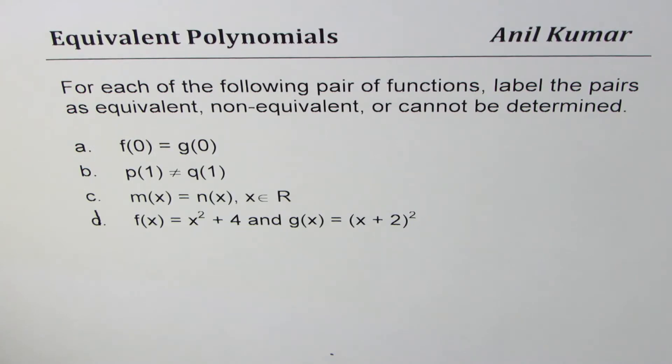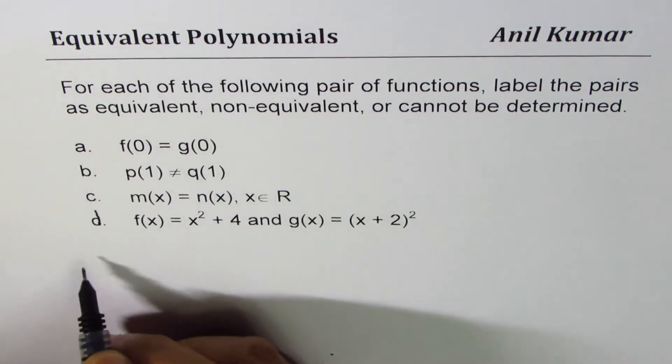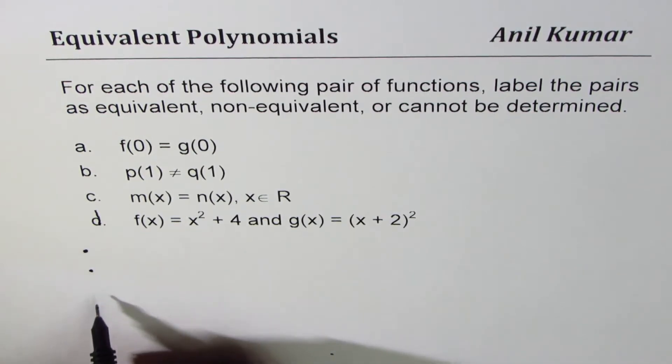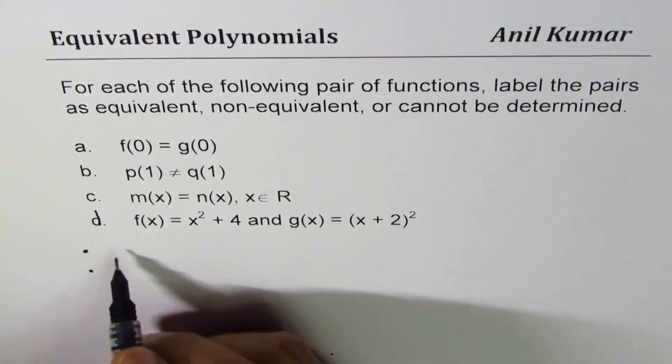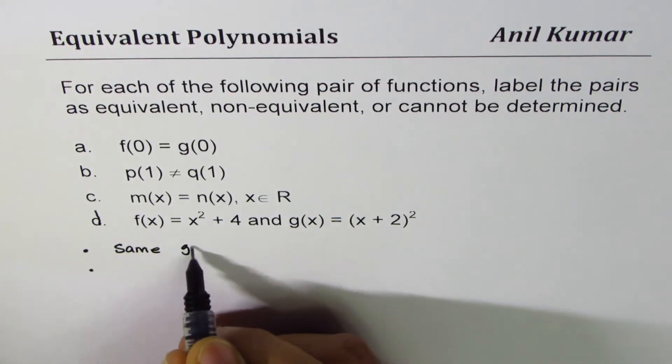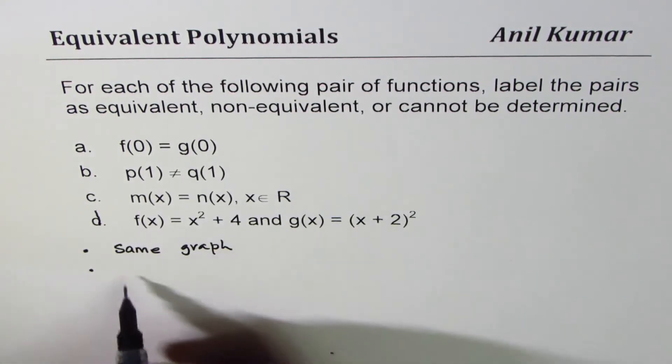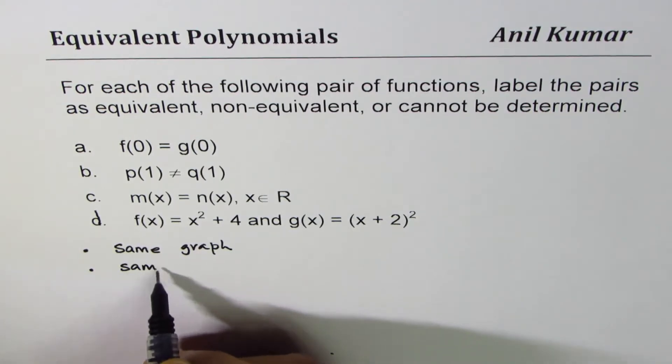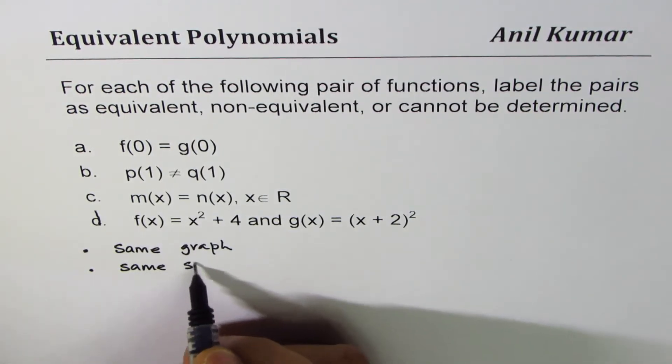Now what are equivalent polynomials and how can you see that two are equivalent polynomials? One is they could have same graph, exactly the same graph, or they could have same simplified equation.